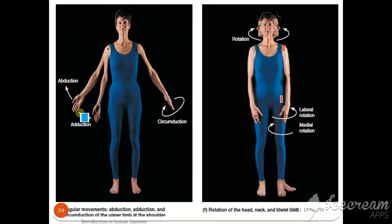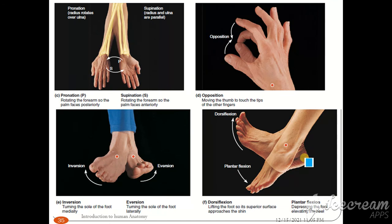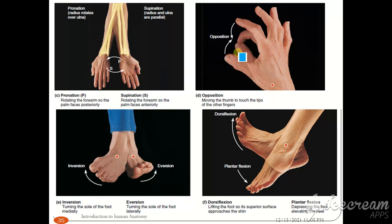Movement toward the body is adduction; away from the body is abduction. When we look at rotation: this is lateral rotation, and this is medial rotation — toward the body is medial rotation, away from the body is lateral rotation. Pronation means rotating the forearm so the palm faces posteriorly. Supination is the opposite position, with the palm facing anteriorly.